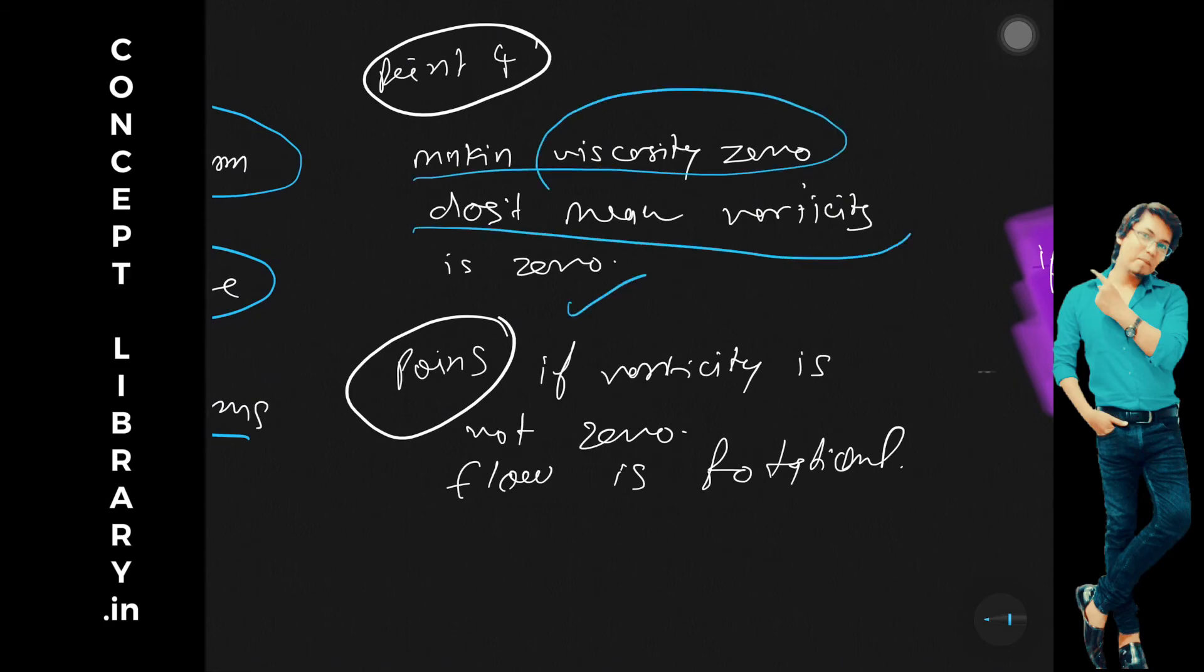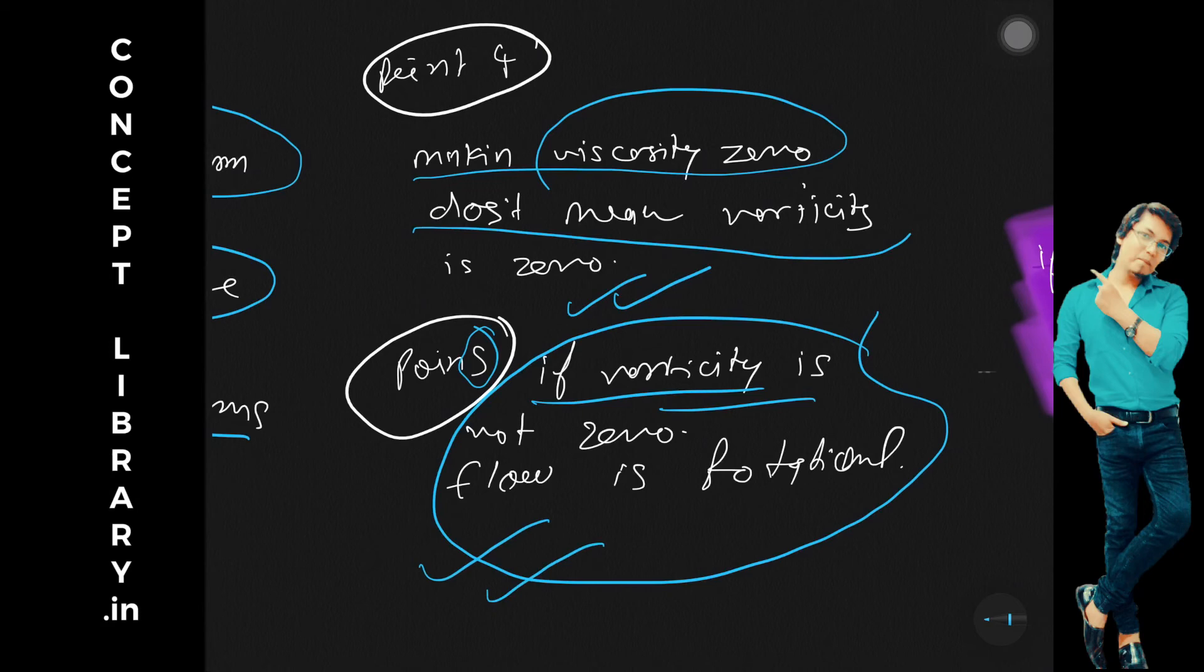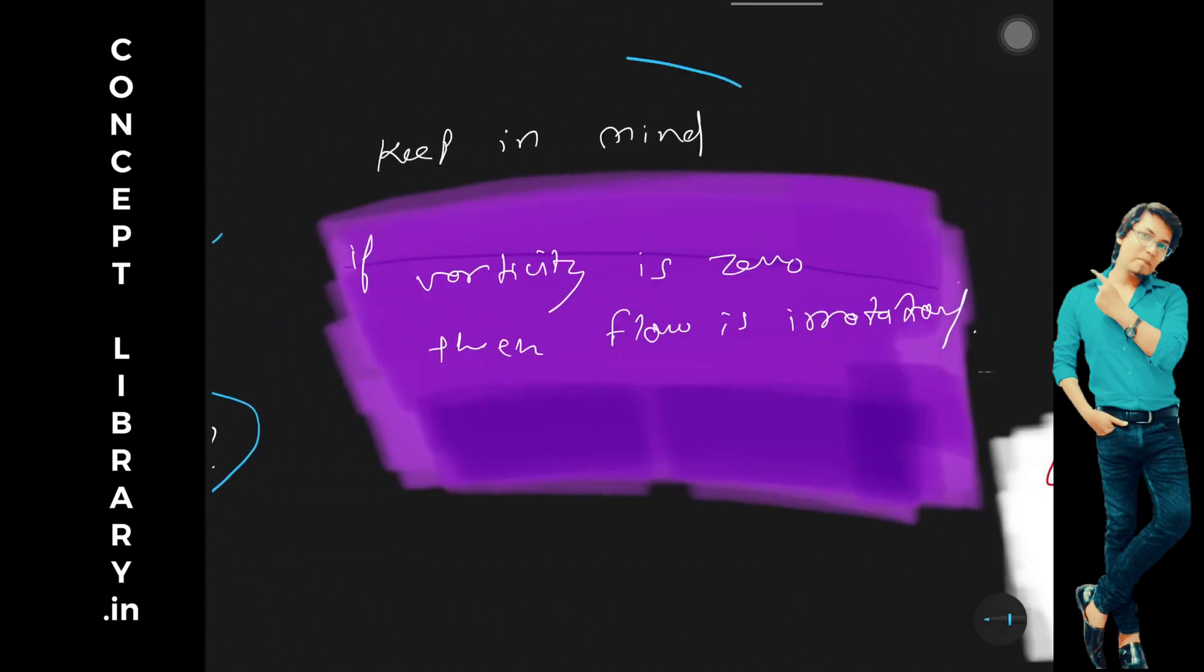Very important, point five: if vorticity is zero, then only flow is irrotational. If vorticity is not zero, flow is rotational, right? So I hope you got the idea. Keep in mind, if vorticity zero, then flow is irrotational.